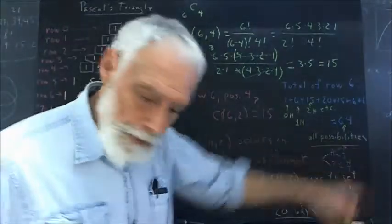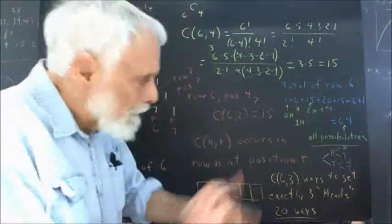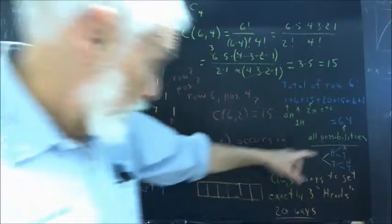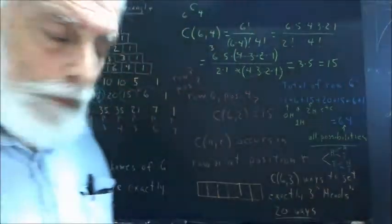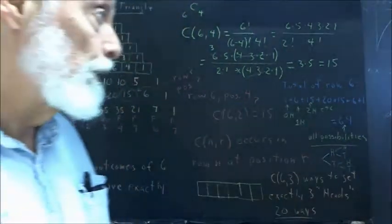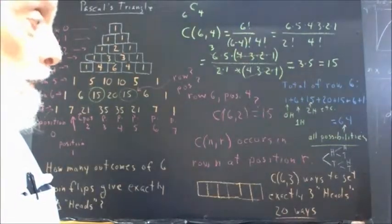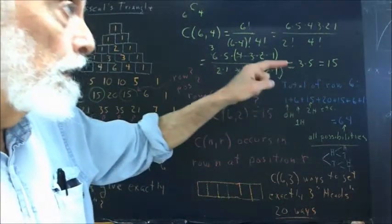If you don't believe me, write out the tree yourself. Take a big piece of paper, write things pretty small, and count up your results. You will see that there are 64 possible outcomes when you flip six coins.